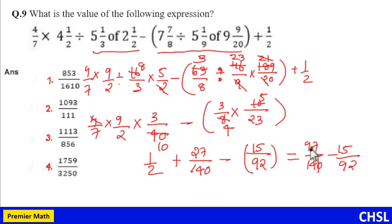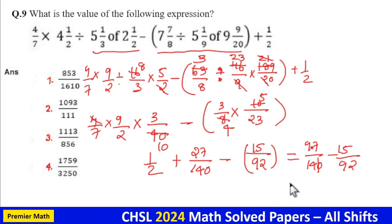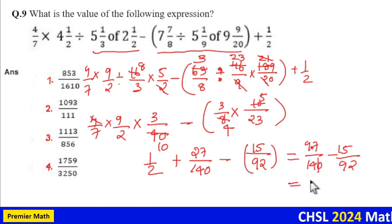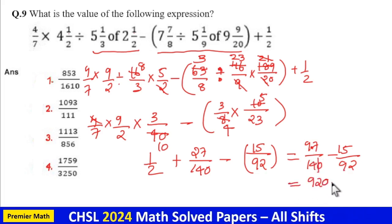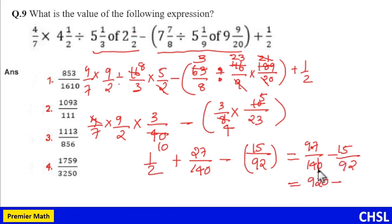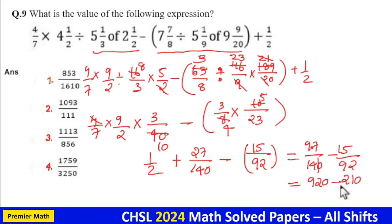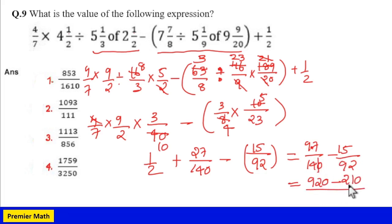Now 9.7 I will approximate it as 10. So this will become 10 into 92 means 920 minus 14 into 15 as 210. Now you can see in numerator you have 3 digit number. If you look at the option,